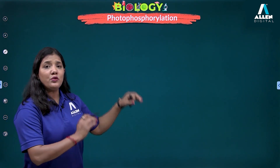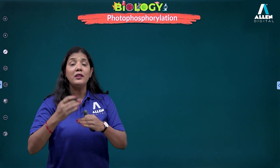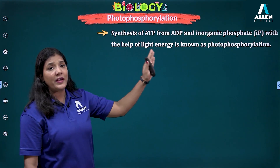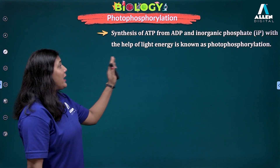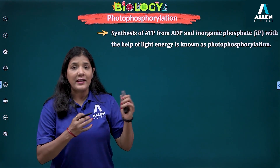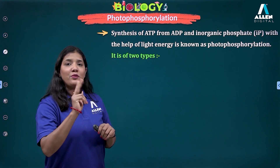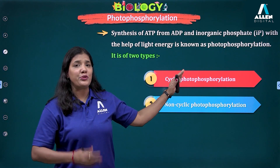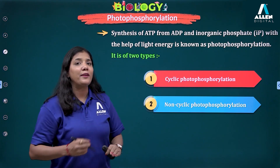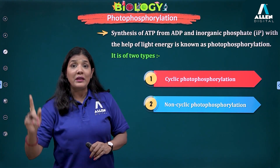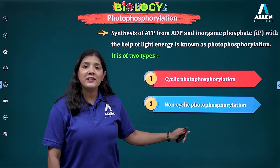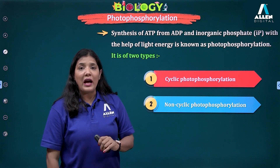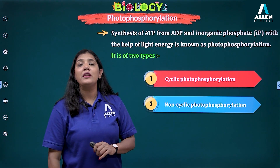Now we will be moving on to photophosphorylation. In this reaction there will be synthesis of ATP, NADPH2, and also the splitting of water. Synthesis of ATP from ADP and inorganic phosphate with the help of light energy is called photophosphorylation, under the influence of sunlight. It is divided into two types: cyclic photophosphorylation and non-cyclic photophosphorylation. In cyclic photophosphorylation, the electron lost by the chlorophyll A molecule will return to it, forming a cycle. In non-cyclic photophosphorylation, the electron lost by chlorophyll A will not return; it will be given to NADP+ for the formation of NADPH2.